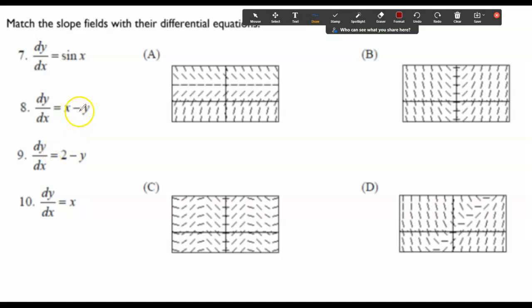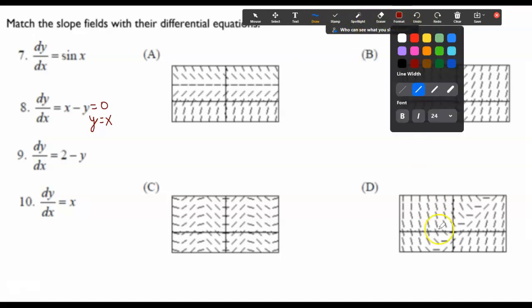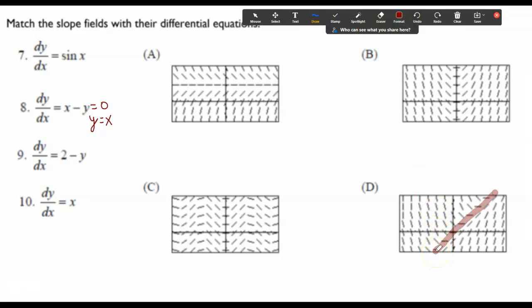So let's start with 8. So x minus y is going to equal 0 when y equals x. So do I have any here? That appear to have a 0 when y equals x? Yes. So this is going to be d then.